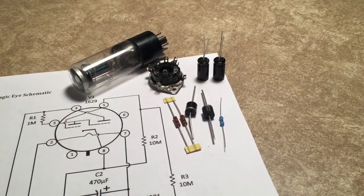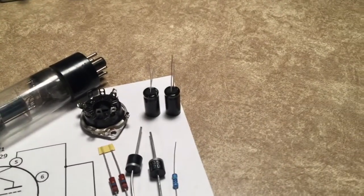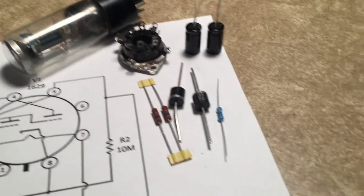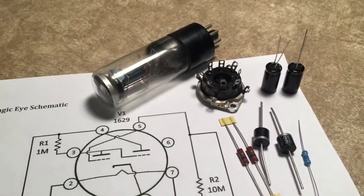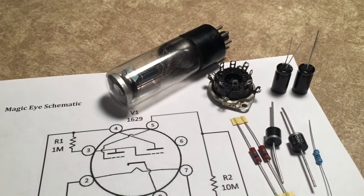So this is all this little project is going to consist of: a couple of capacitors, a socket, some resistors, and some diodes, and the magic eye tube itself.